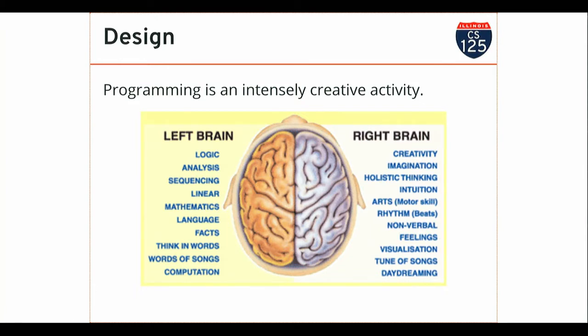I'm going to show you the syntax and some best practices in Java for how we use the built-in language features to create new types and use those to model data. But at the end of the day, when you go off and do this in the real world, this is one of the places in your program where you really have to slow down and think: what does this piece of data look like? What other pieces of data does it contain? How am I designing this?